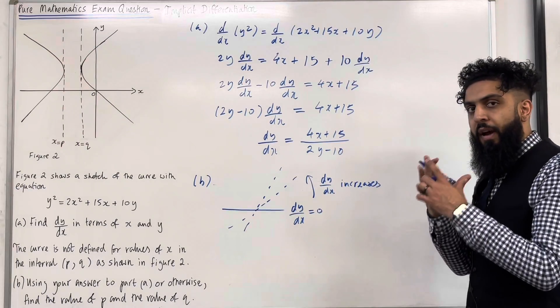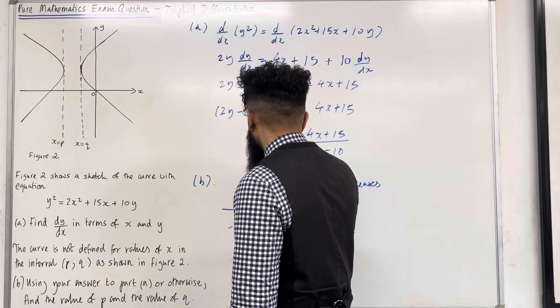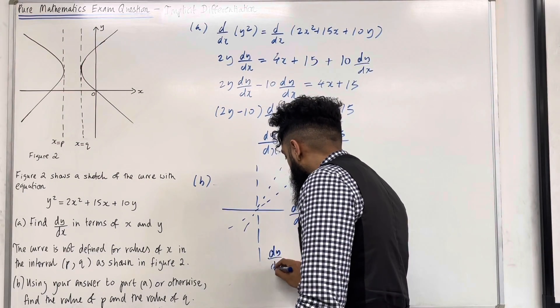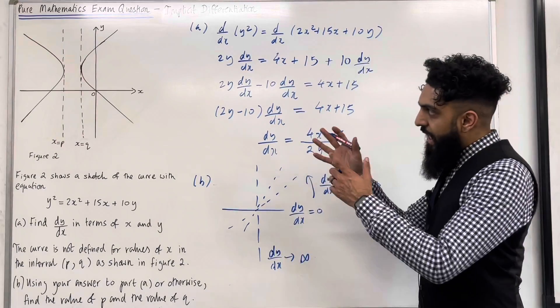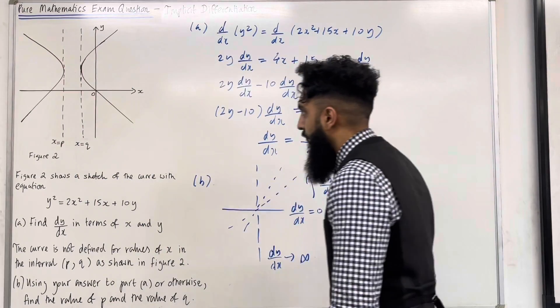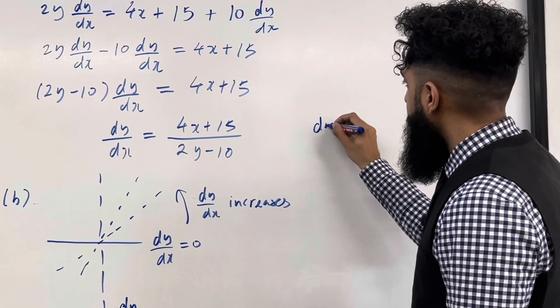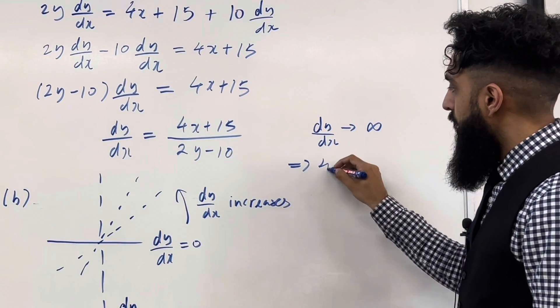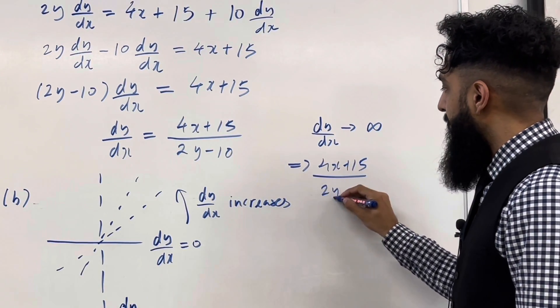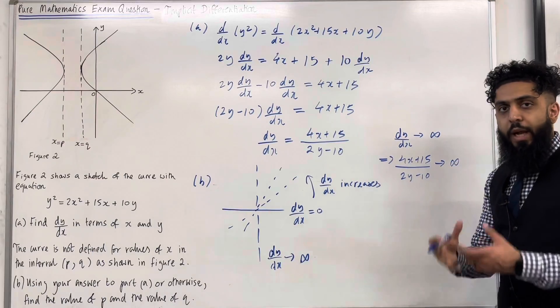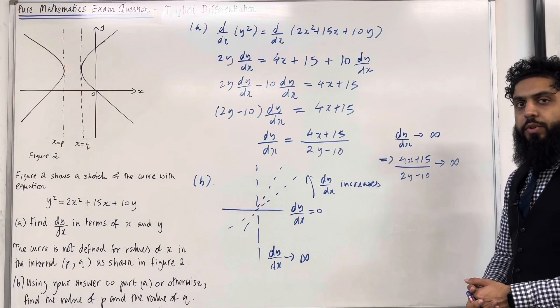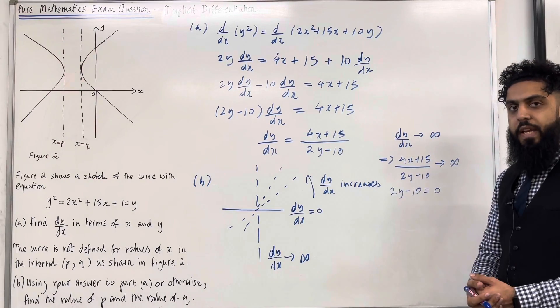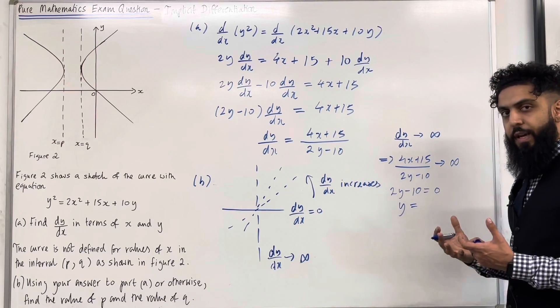When the line becomes perfectly vertical, the dy over dx tends to infinity. So over here, we have perfect vertical lines. So we've got dy over dx tends to infinity. So this implies that this fraction here, 4x plus 15 over 2y minus 10, tends to infinity. It will tend to infinity if the denominator is equal to 0. So if 2y minus 10 is equal 0, I can solve the equation. So I've got y equal 10 divided by 2, which is 5.